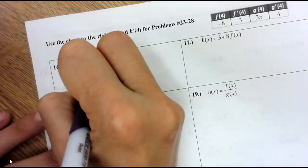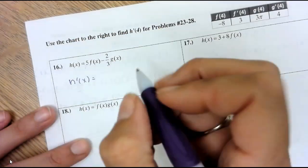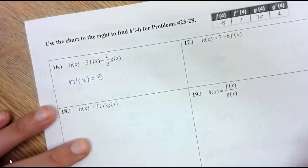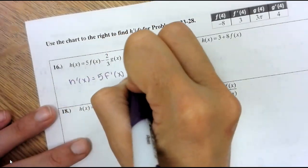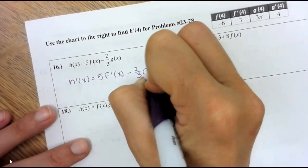So it's h prime of x equals, this is a constant, so the constant stays. So it's 5 f prime of x minus 2 thirds g prime of x.